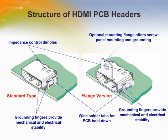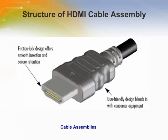The connectors are available with or without a panel mounting flange. Mounting flanges provide additional grounding, protection of solder joints, and screw panel mounting. Wide solder tabs ensure PC board retention, and grounding fingers provide electrical and mechanical stability. Besides the standard 19-circuit PC board receptacles, Molex also has a receptacle with a reduced footprint, saving up to 28% of PC board real estate. Molex's HDMI cable assemblies are offered in both HDMI-to-HDMI styles for true digital connectivity and HDMI-to-DVI versions to accommodate the transition of equipment still using DVI connectors.